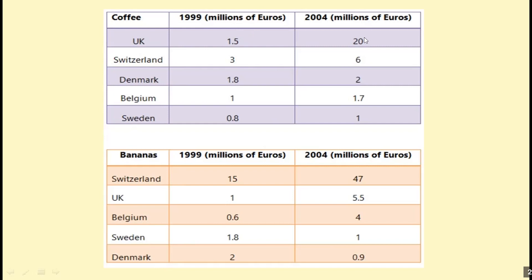Looking at the data: for coffee in 1999 the values were 1.5, 3, 1.8, 1, and 0.8, and in 2004 they became 20, 6, 2, 1.7, and 1. For bananas, 1999 figures were 15, 1, 0.6, 1.8, and 2, rising in 2004 to 47, 5.5, 4, 1, and 0.9.